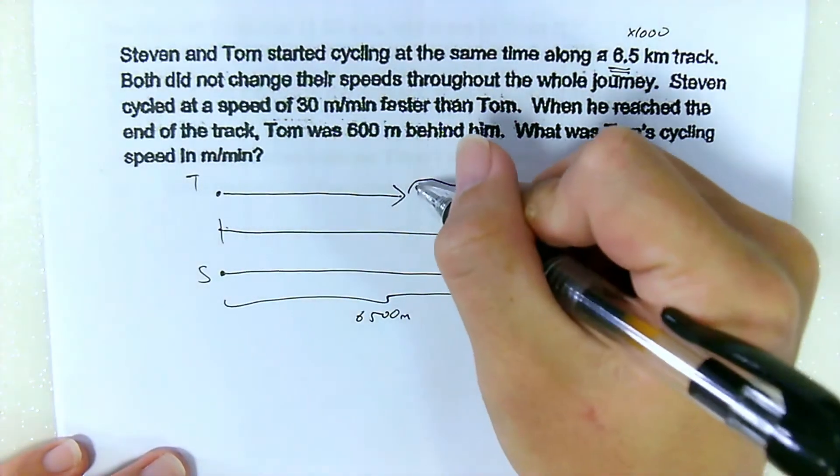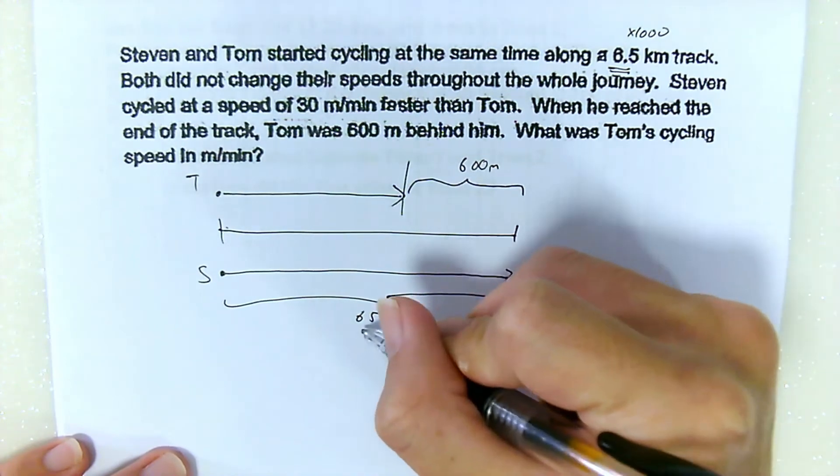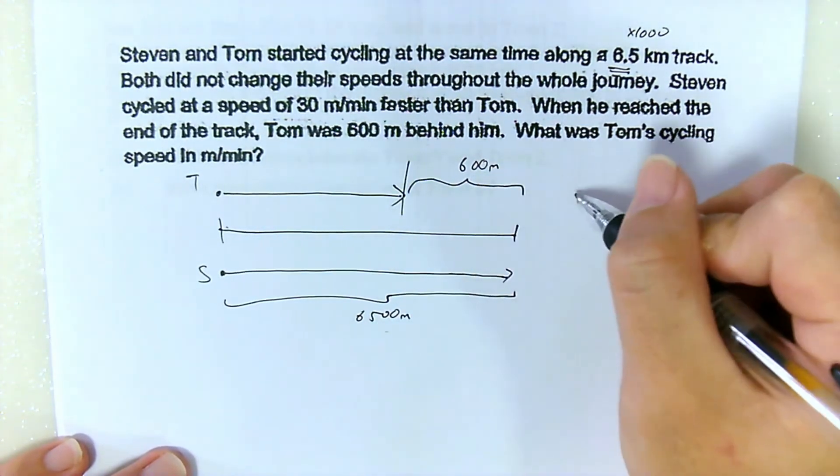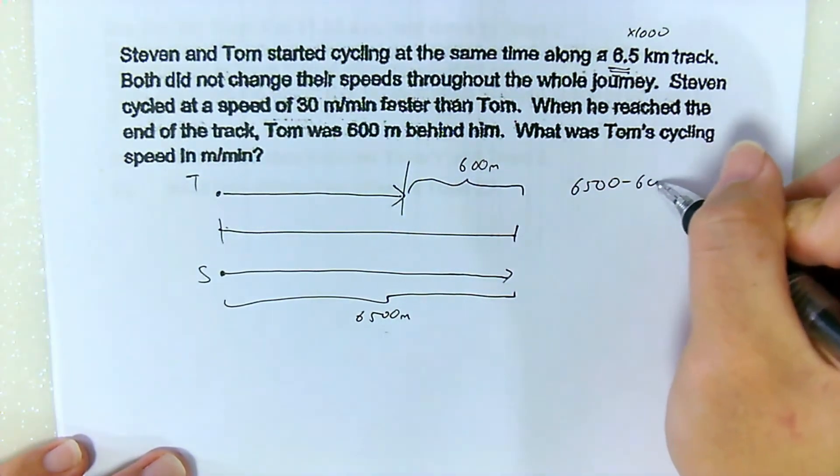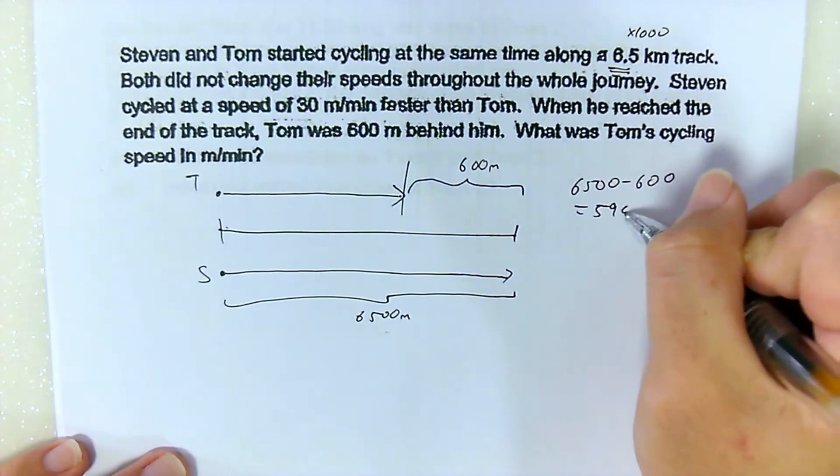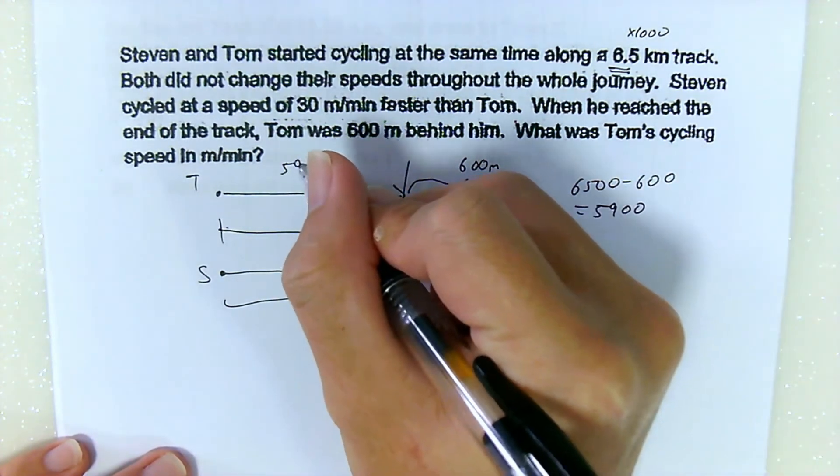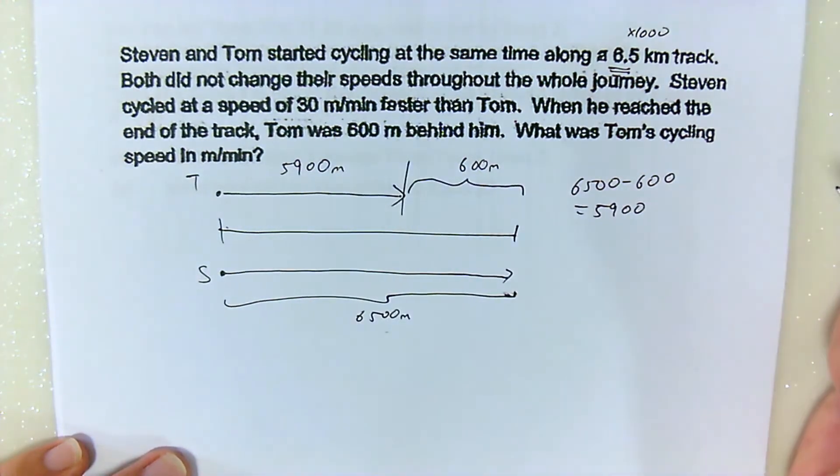So we know that Tom actually traveled only, 6,500 minus 600. That will give us 5,900. Tom only traveled 5,900 meters.